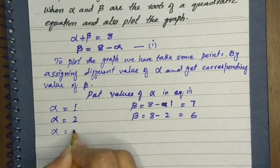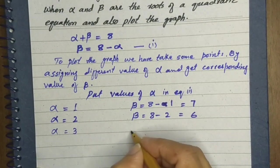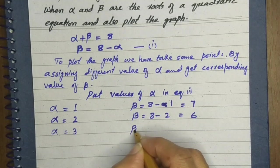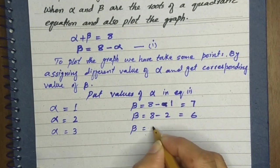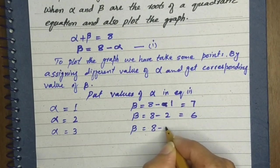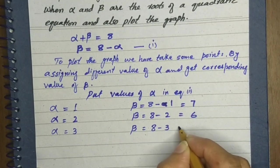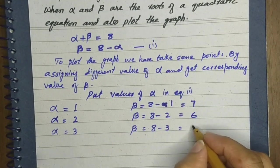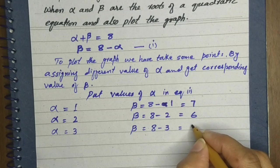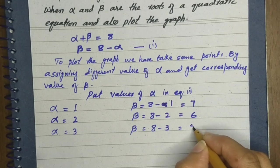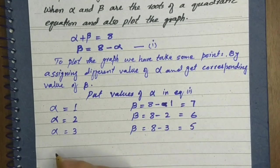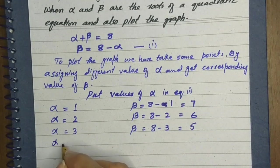Alpha is equal to 3. When alpha is 3, what will beta be? We subtract 3 from 8, so beta comes out to 8 minus 3 = 5.